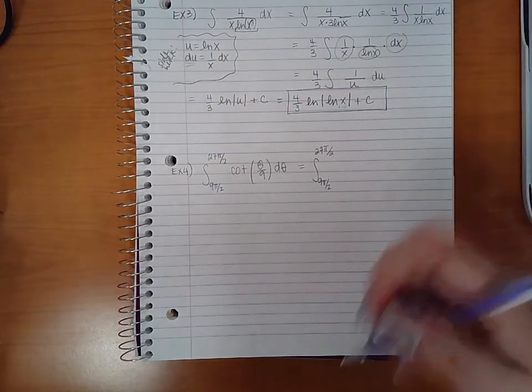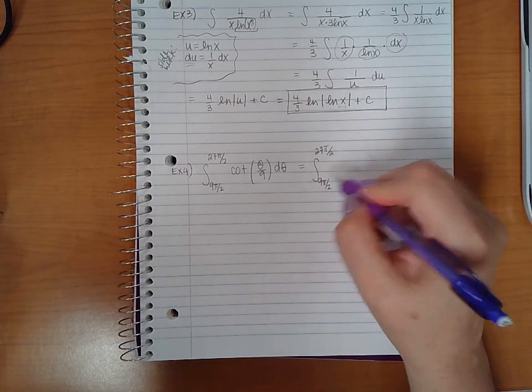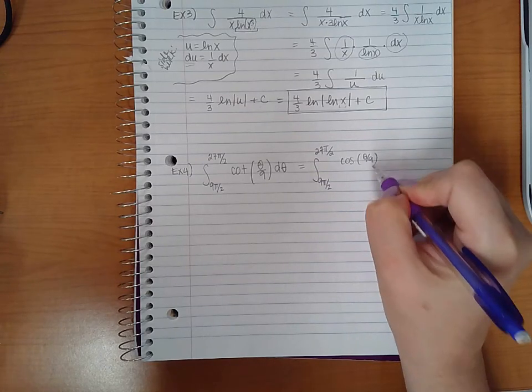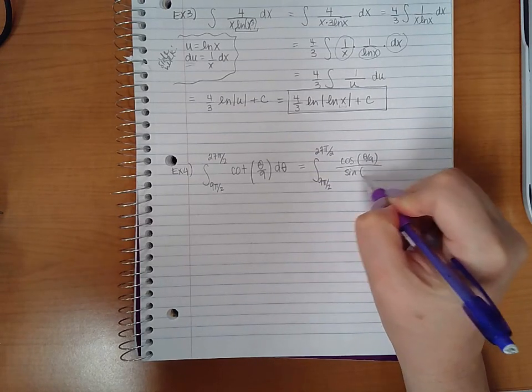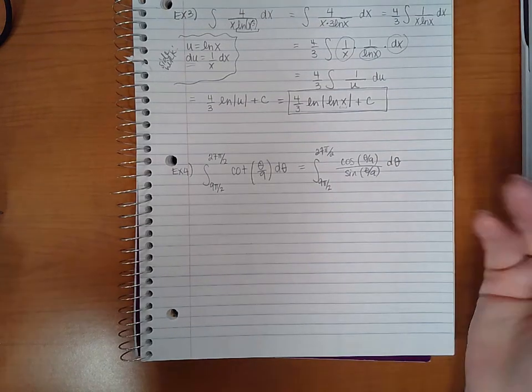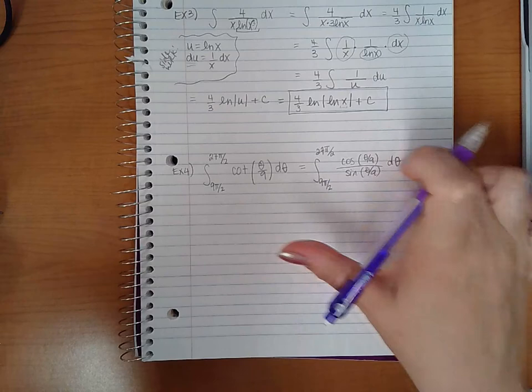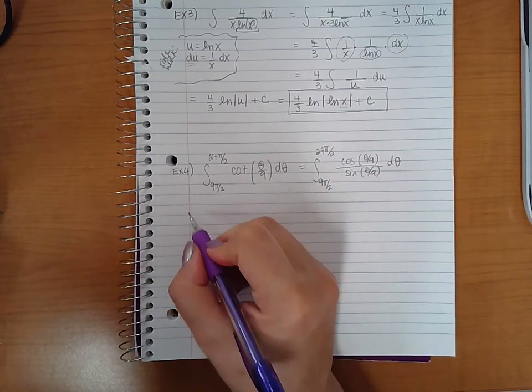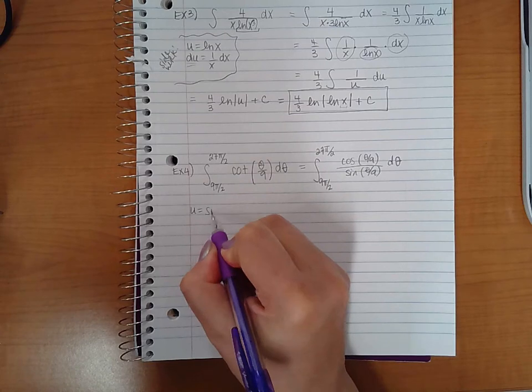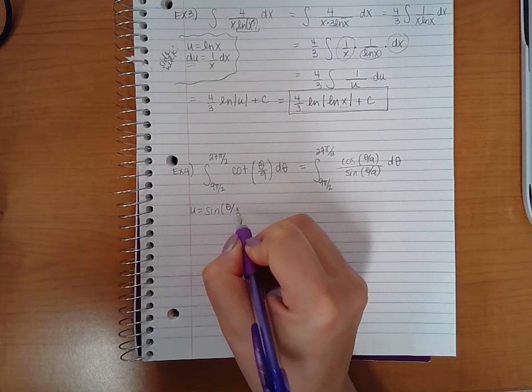We are in the ln section, and for the ln section typically you have to have a fraction because you want to have du over u to get an ln. Cotangent is actually cosine of the angle over sine of the angle. The u is typically what's in the denominator, so I'm going to let u equal sine of theta over 9.